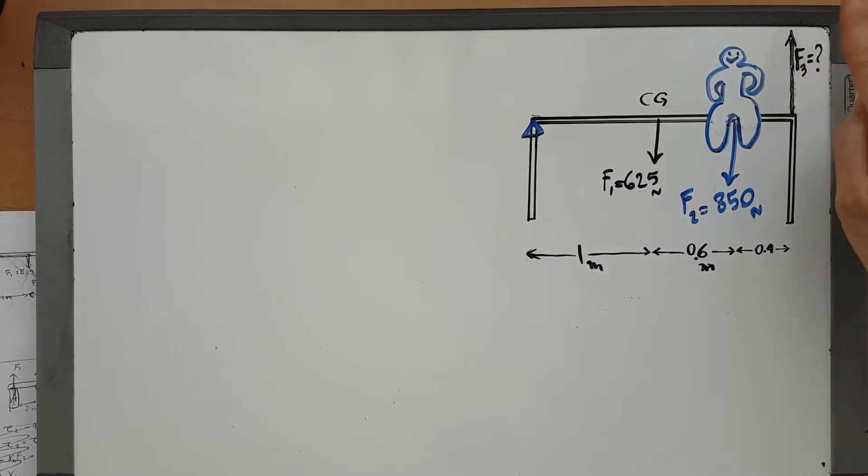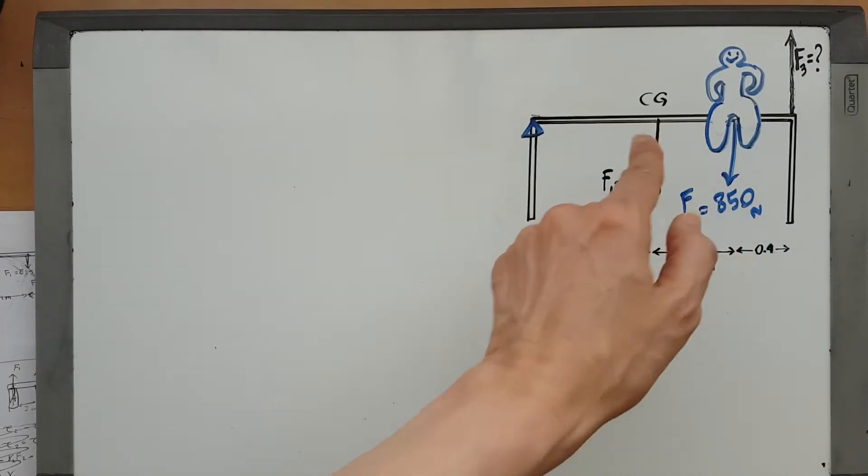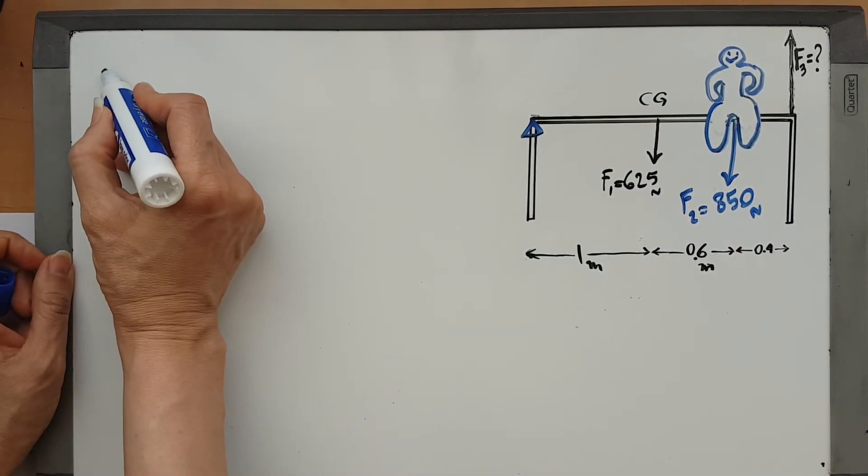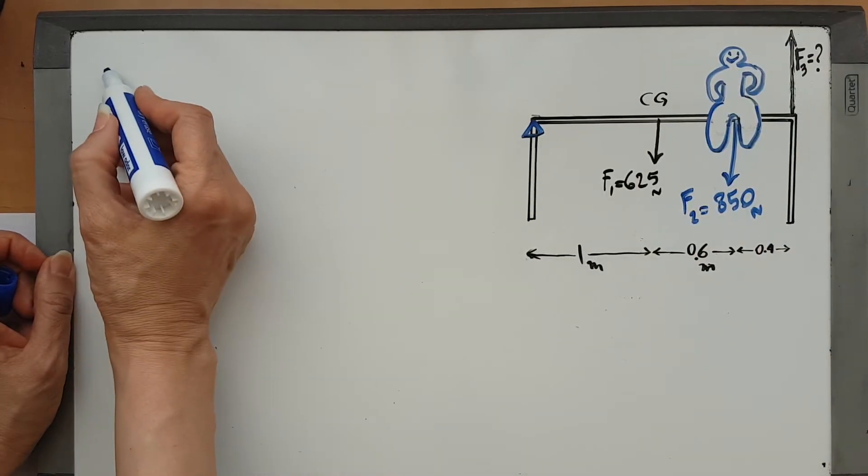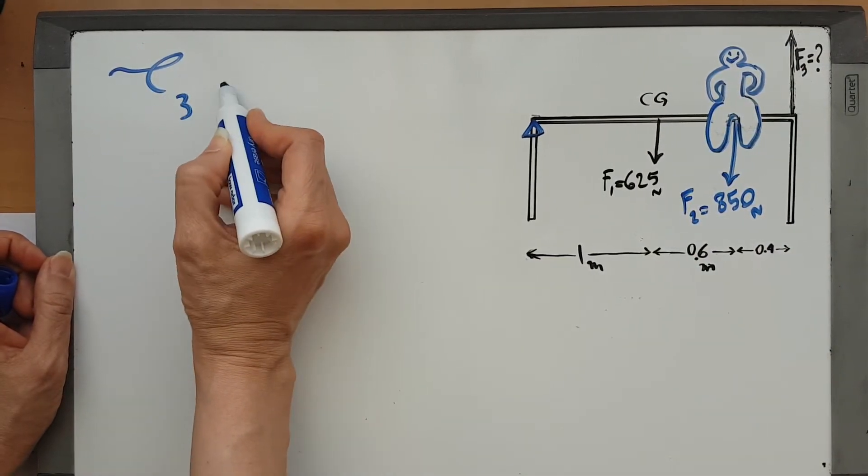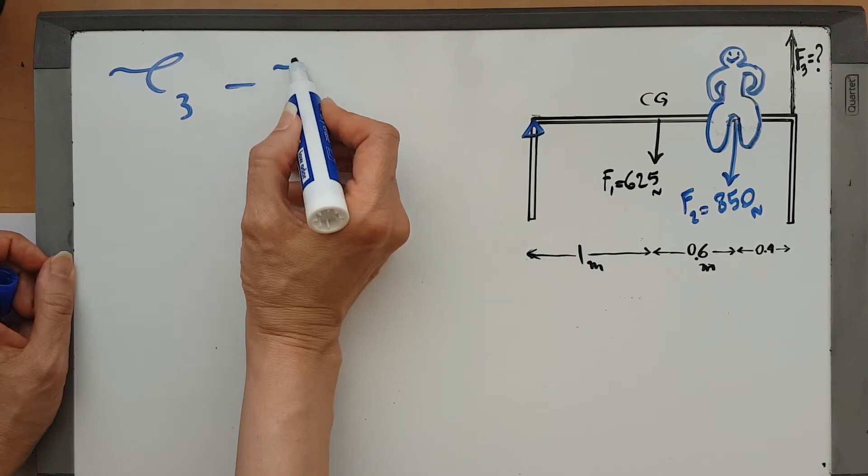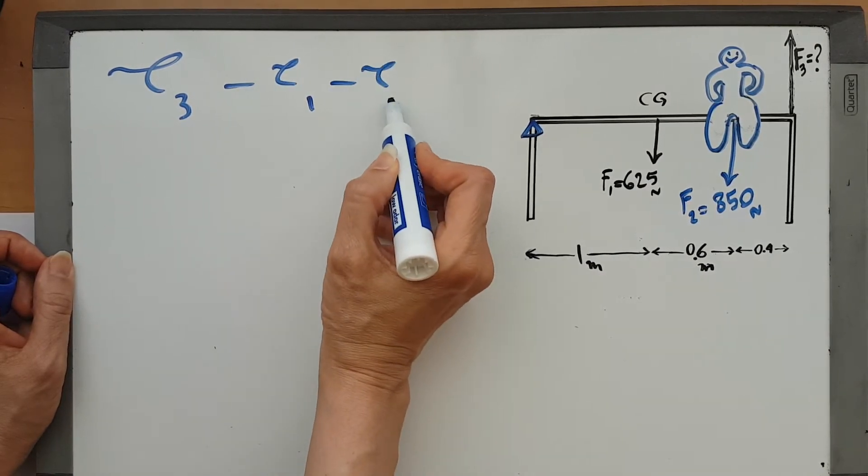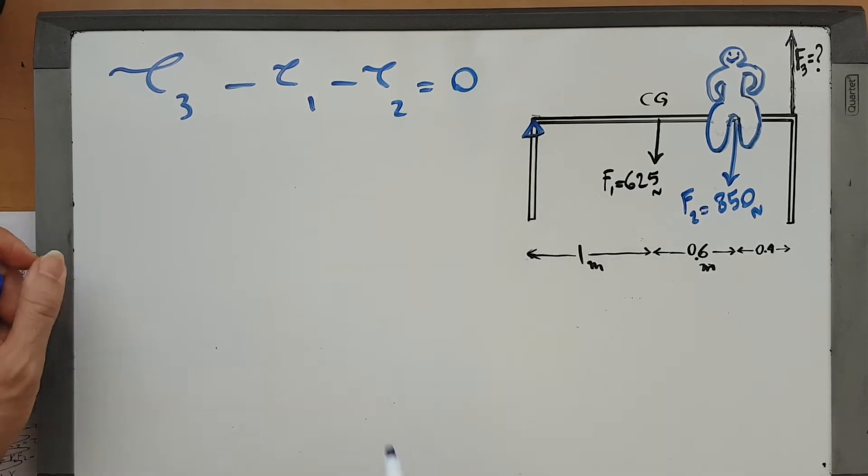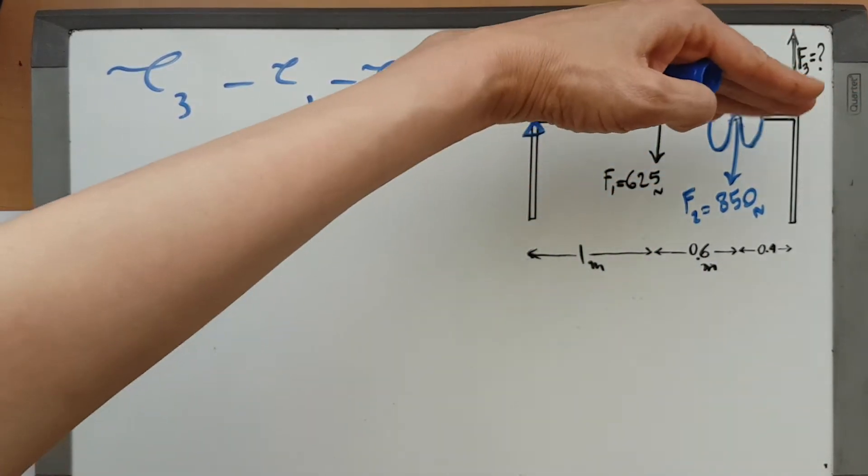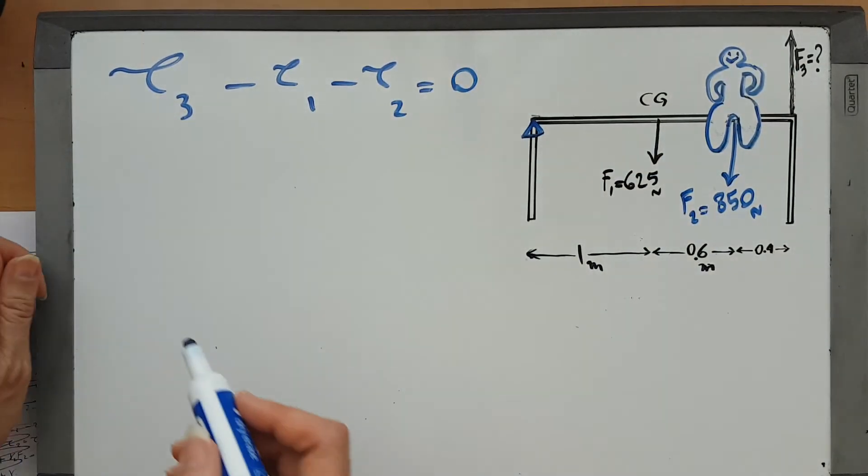The torque caused by F3, torque 3, minus these two other torques, torque 1 and torque 2, must be 0 because we need balance. These ones are on this side and this one is on the other side - counterclockwise, which is a positive torque.